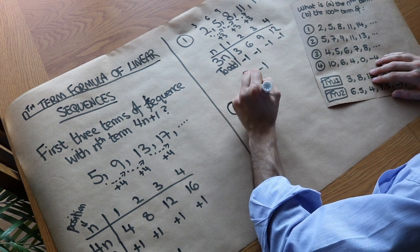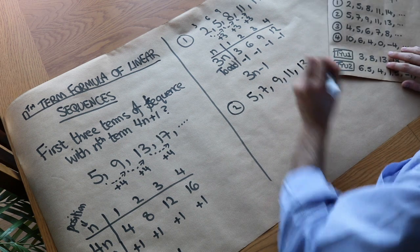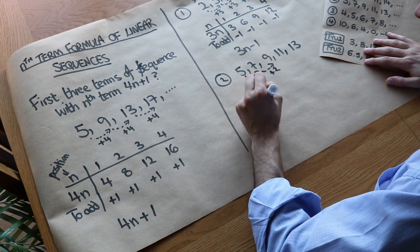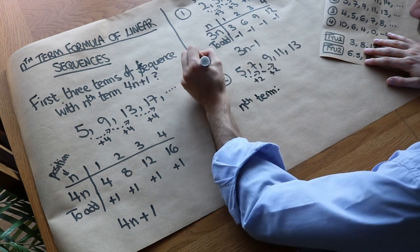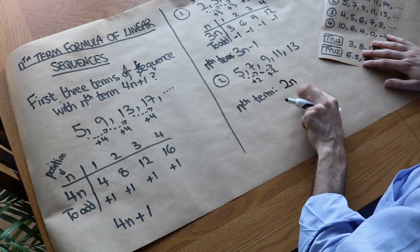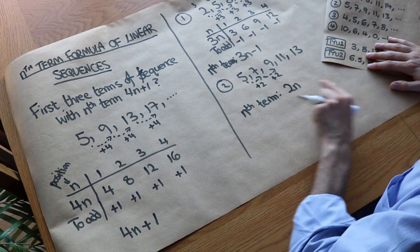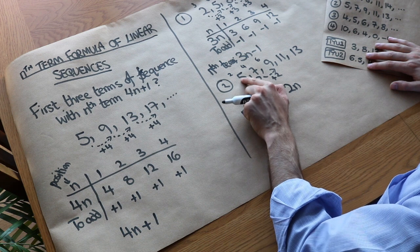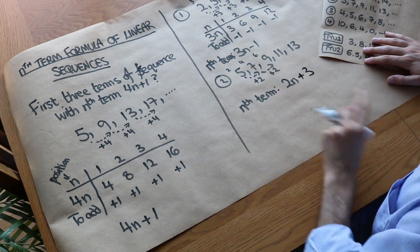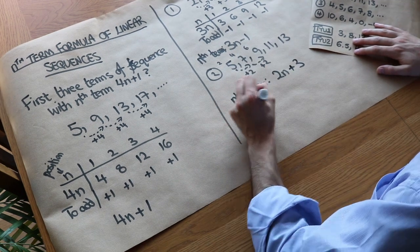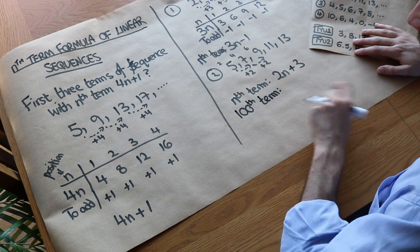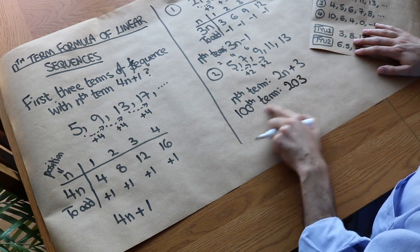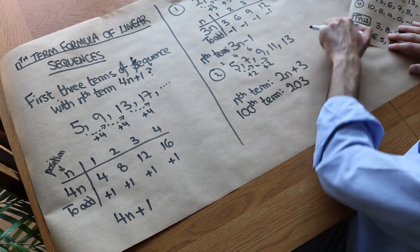Second sequence: 5, 7, 9, 11, 13. We're adding 2 each time, so the nth term is going to be 2n. Now 2n gives us the 2 times table — so it gives us 2, 4, 6. But we actually want 5, 7, 9. We need to add 3 each time. So it's going to be 2n plus 3. Now I also need to find the 100th term. We just need to make n equal to 100: 2 times 100 is 200 plus 3 equals 203. So we've found a distant term in this sequence without having to write out all the numbers up to the 100th term.